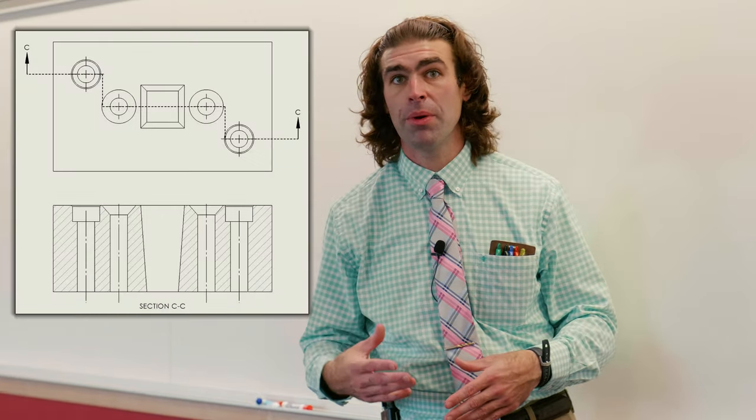The next section we have to talk about is the offset section. This does a similar thing to the half section except with rectangular parts. You use this when you have multiple features to section, but they're not all on the same plane.